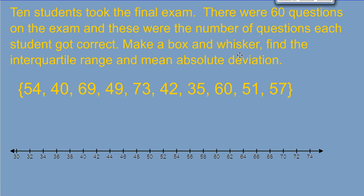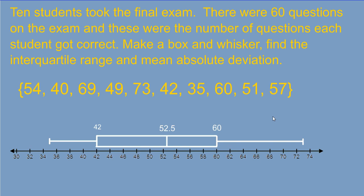All right, let's see how you did. First of all, when you find the median, you end up with 52.5, which is halfway between 51 and 54. Then when you find the median of the lower half, you get 42. The median of the upper half is 60. We connect those to make our box, and you should have whiskers that stretch out to 35, the lower extreme, and a whisker that stretches to 73, the upper extreme.